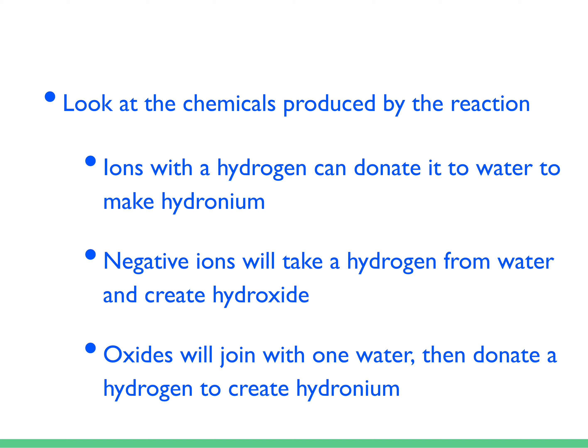A negative ion, instead of donating a hydrogen, will take a hydrogen away from water. So it will gain a hydrogen and one positive charge, and the water will turn into a hydroxide ion.